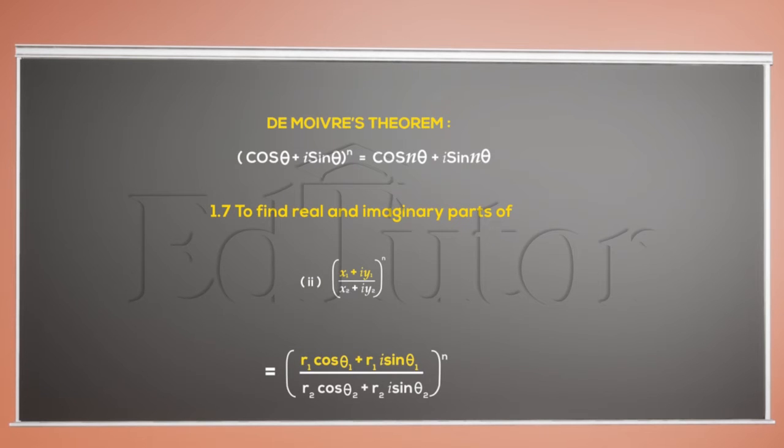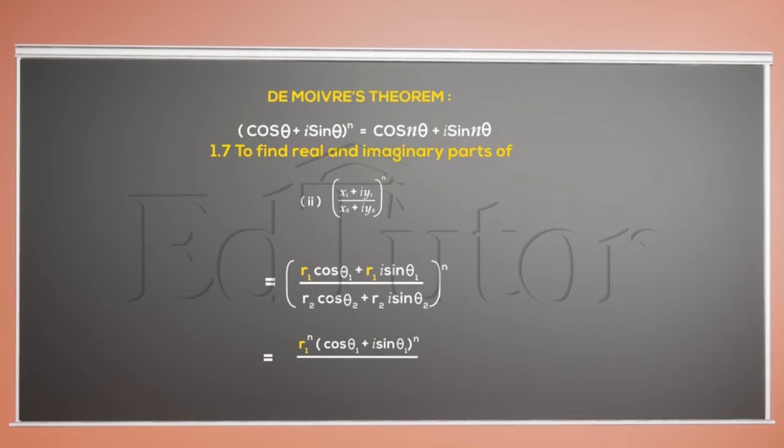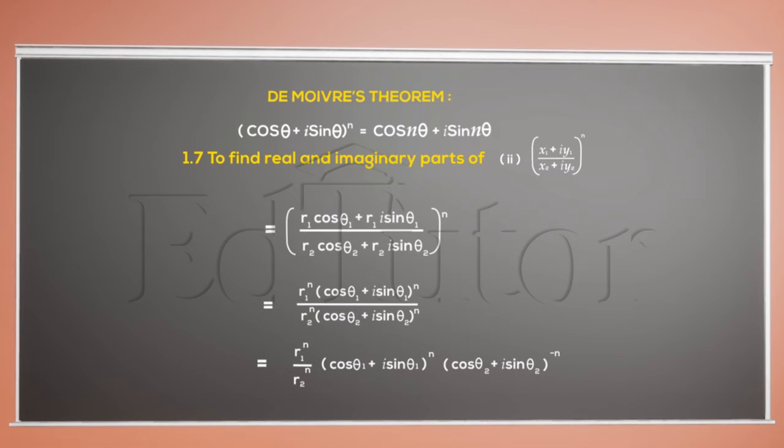Start by bringing both the numerator and the denominator into their equivalent polar forms so that the given complex fraction looks like this. Take R1 common from the numerator and R2 from the denominator. Now, shift the term of numerator up here and change the sign of its power.